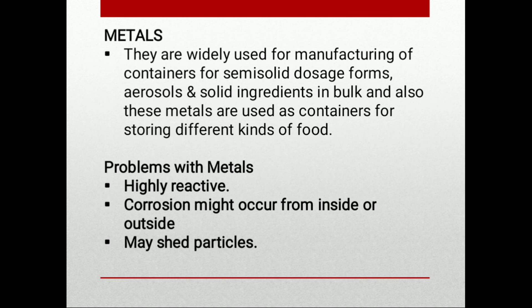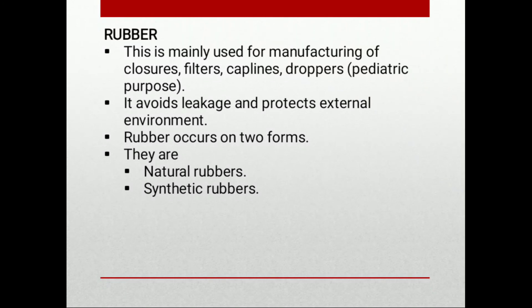The next packaging material is rubber. Rubber is mainly used for manufacturing closures, filters, cap liners, and droppers — generally for pediatric purposes. It avoids leakages and protects from the external environment. Rubber occurs in two forms: natural rubber and synthetic rubber. We will not go into much detail here as this has already been covered in our previous semester in packaging.